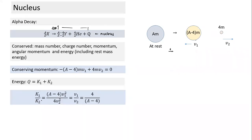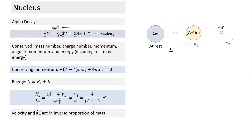The ratio of kinetic energies K1 to K2: since momentum is conserved (M1·V1 = M2·V2), the ratio of kinetic energies is inversely proportional to the ratio of masses. So K_alpha/K_daughter equals mass of daughter divided by mass of alpha, which is (A−4)/4. Kinetic energy is inversely proportional to mass.